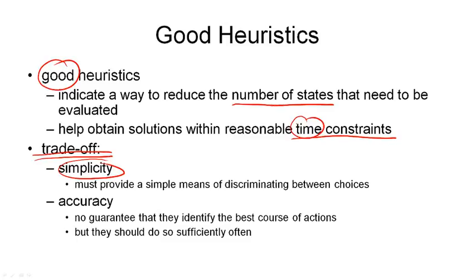But heuristics that are simple to compute are often not accurate. And accurate is the other property in our trade-off here. A heuristic, unless it is perfect, does not provide a guarantee that it tells us which the best successor is to explore next. So there's no guarantee that it identifies the best course of action. But if it's a good heuristic, it will do this more often than a heuristic that is not as good.